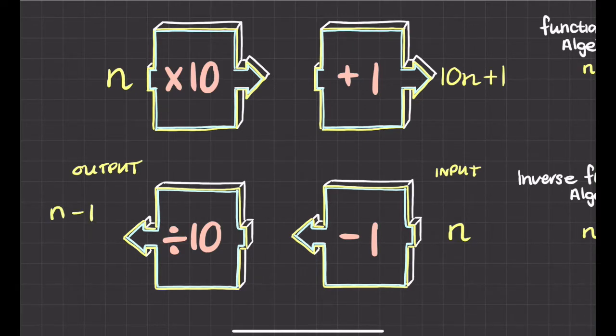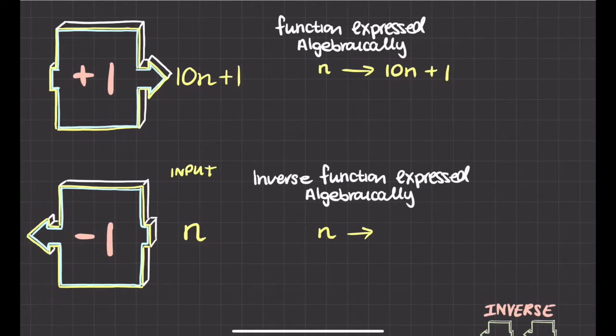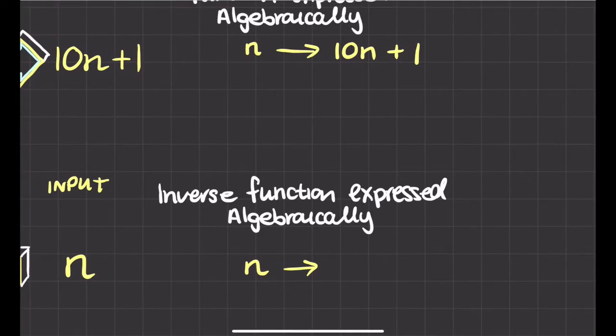That whole thing, divide that whole thing by 10, and that's my output. So if I was writing that algebraically, then we say whatever our number is that we put in, the number that we get out is going to be n minus 1 divided by 10.